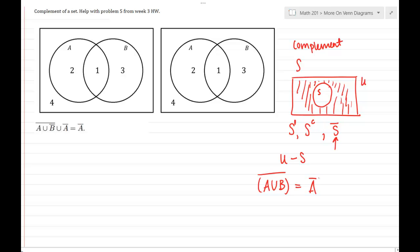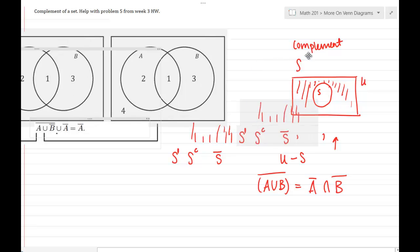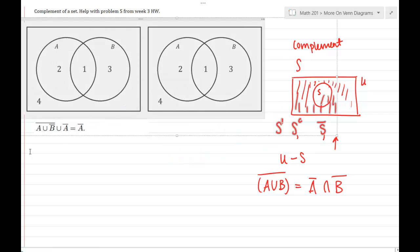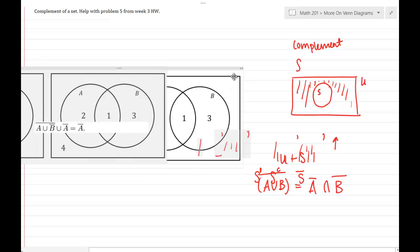If you take the complement of a union of two sets, it becomes the intersection of the complements. So what I'm going to do is use these Venn diagrams to demonstrate this equality. So I'm going to prove this equality to you. I'm not really going to do the actual problem, but this process should help you understand how to deal with that bar.